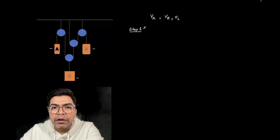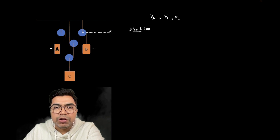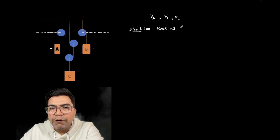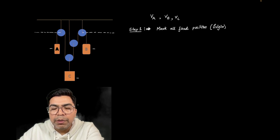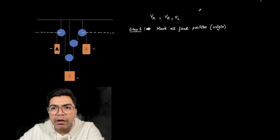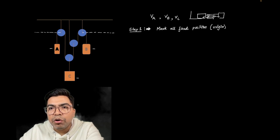And if you follow these steps, trust me, even the most complex problems you can solve very easily. Step 1 is: you have to first find or mark all the fixed positions. So this is a fixed position, we'll mark this. This is a fixed position, we'll mark this. So mark all fixed positions — this is the first step. I hope everyone has got it. And why we are doing this is because this can be treated as origin. I did one problem last time on this constraint motion, in which there was a block connected by a pulley. So in this particular question also, I started with one fixed origin. So we have to mark all fixed positions, because that will be treated as origin.